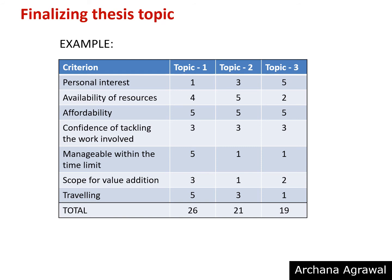Come to the next criterion: availability of resources. Though your interest lies with topic number 3, data available on that topic is very less and you don't have any contacts in that field to extract more data. At the same time, it falls under a restricted area where you may not be allowed to visit the site. So for the second criterion, you give 4 points to topic number 1 and 2 points to topic number 3.